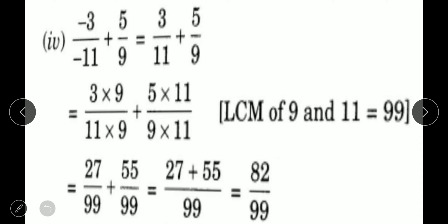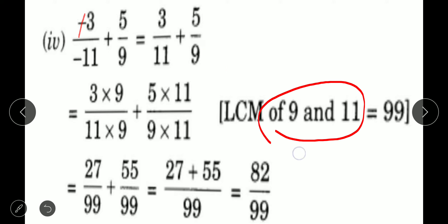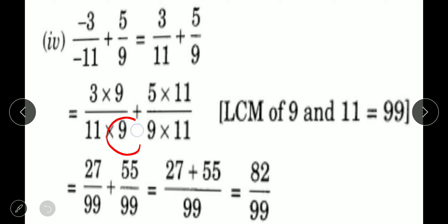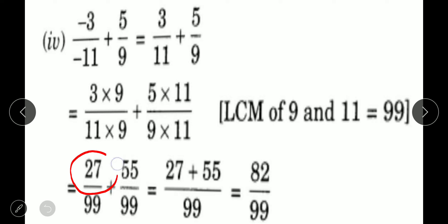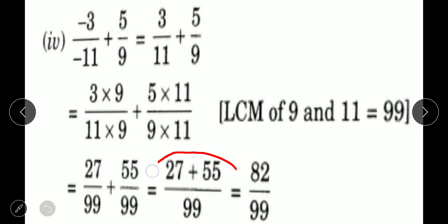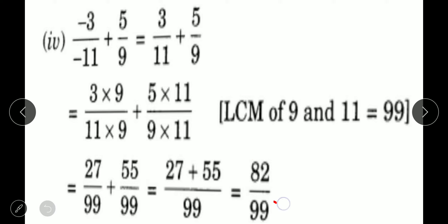Fourth part: minus 3 upon minus 11 plus 5 upon 9. First, cancel the minus from the numerator and denominator — minus minus becomes plus — so it becomes 3 upon 11 plus 5 upon 9. Now take the LCM of 11 and 9, which is 99. Multiply 3/11 by 9 to get 27/99, and 5/9 by 11 to get 55/99. Then 27 plus 55 is 82 upon 99, which is a proper fraction.